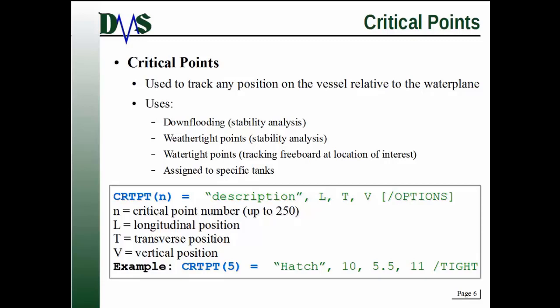So the way you define it is the command is critpoint, and then n. n tells you which critical point number you're going to be defining. You can have up to 250 critical points. Equals, then you have a description. That's going to be any description you want to give some sort of hint as to what this point is. And then you have your coordinates, your longitudinal, transverse, and vertical coordinates. So that defines the location of the point. Remember, it is just a point.